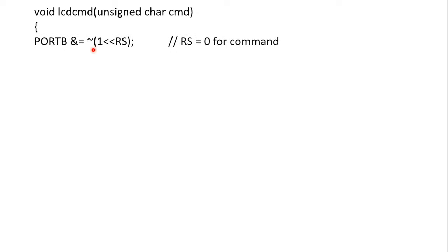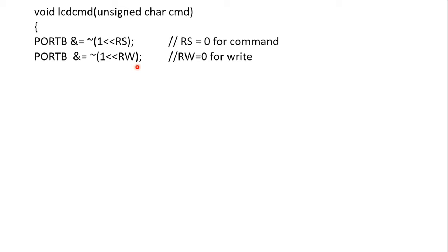For command mode, we write 0 on the RS pin: PORTB &= ~(1 << RS). This makes PB0 go low without disturbing other Port B pins. Similarly, PORTB &= ~(1 << RW) makes the RW line 0 — though this is optional here since RW is already connected to ground. If you connect RW to a microcontroller pin instead, you would need this statement.